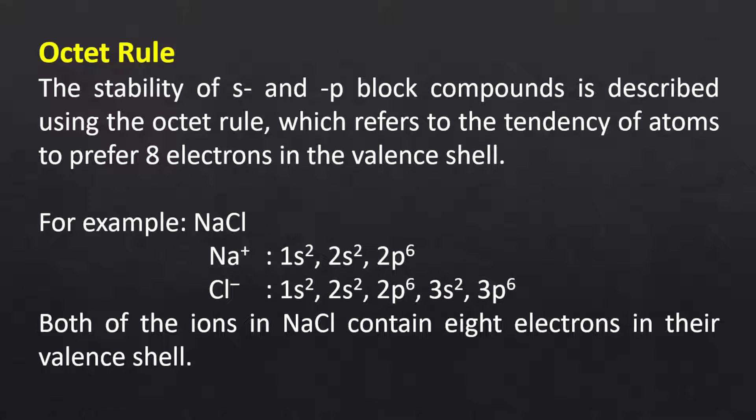This is how they achieve the same electronic configuration as the noble gas in the period. For example, sodium chloride. The electronic configuration of the sodium ion is 1s2, 2s2, 2p6, whereas the electronic configuration of the chloride ion is 1s2, 2s2, 2p6, 3s2, and 3p6. Both ions in sodium chloride contain 8 electrons in the valence shell and hence acquire a stable noble gas configuration.